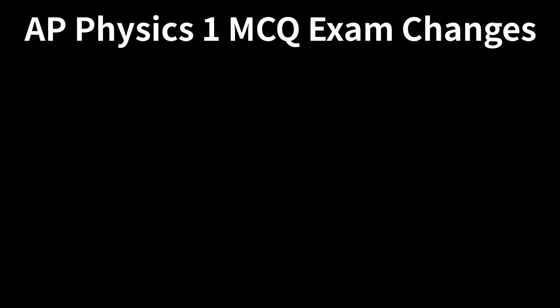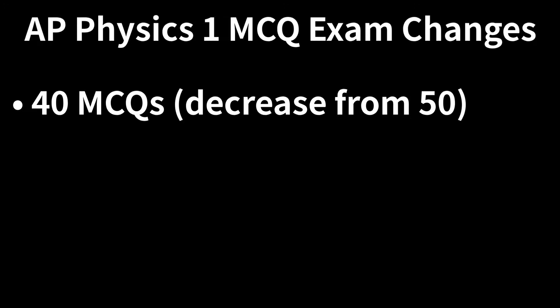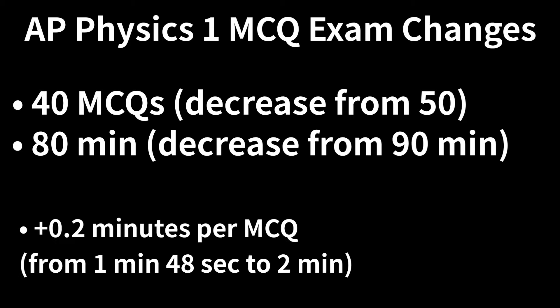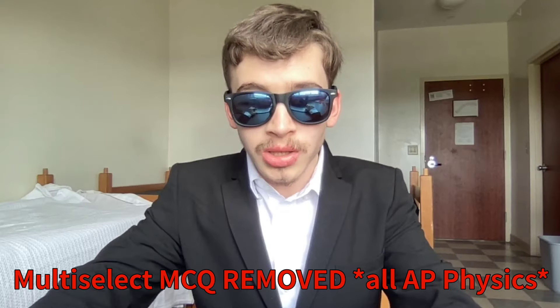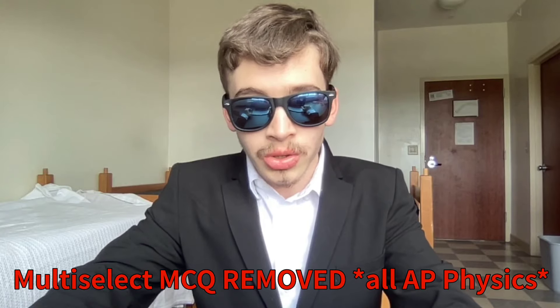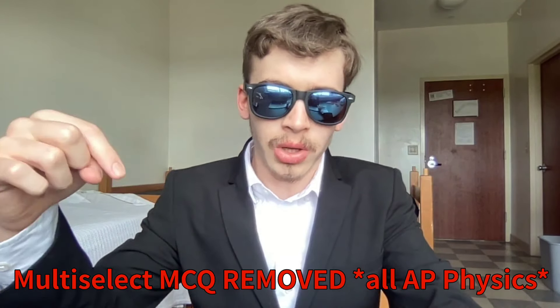Exam-wise, there will be a reduction from 50 to 40 multiple choice questions and from 90 minutes to 80 minutes to do them, granting 0.2 additional minutes per MCQ question from 1 minute 48 seconds to 2 minutes. Multi-select questions are removed, a common change among all AP Physics classes, so tell us your thoughts on that aspect down below.